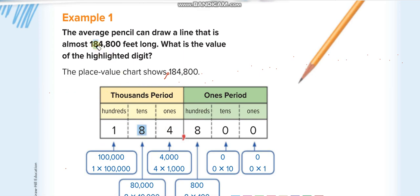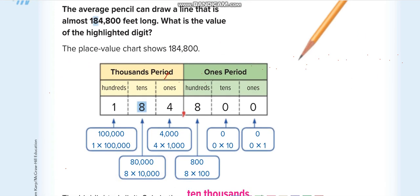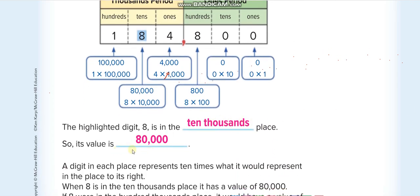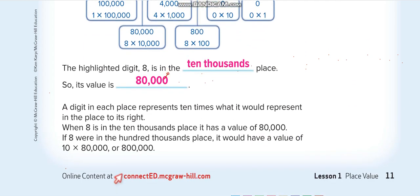You guys have to find the value of the highlighted digit, which is eight. It is in the ten thousands place. In the first period we read it directly as ones, tens, hundreds. In the second period we read it as one thousand, ten thousand, hundred thousand. The highlighted digit eight is in the ten thousands place, so we have eight ten thousands, which means eighty thousand. So the place value is ten thousands and its value is eighty thousand.